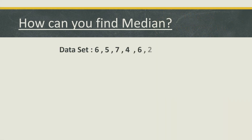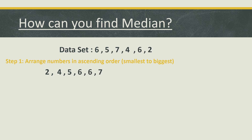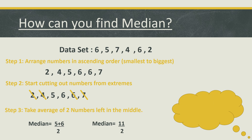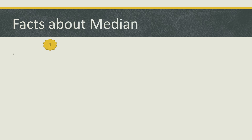But what if there are two numbers in the middle? First arrange the numbers in ascending order, then start cutting out numbers from the extremes. Now you can see two numbers are left in the middle. You can take the average of the two numbers left — add them and divide by 2. So 5 plus 6 divided by 2 equals 11 divided by 2, and our median will be 5.5. The number 5.5 comes between 5 and 6, so our median is correct.